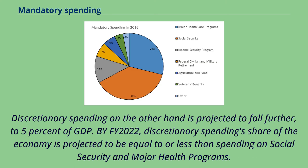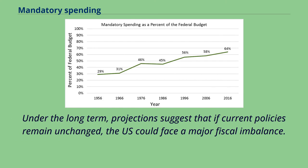Discretionary spending, on the other hand, is projected to fall further to 5% of GDP. By FY 2022, discretionary spending's share of the economy is projected to be equal to or less than spending on Social Security and major health programs. Under long-term projections, if current policies remain unchanged, the U.S. could face a major fiscal imbalance.